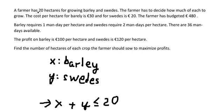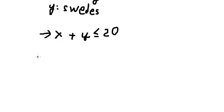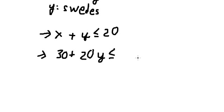This is about the area. The next one is about the cost. The cost for this unit is 30 and the second one is 20. The total budget is 480, so the total cost should be 30x plus 20y, smaller than or equal to 480.